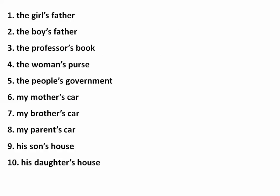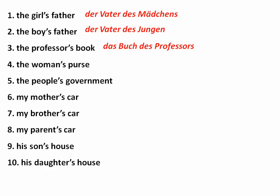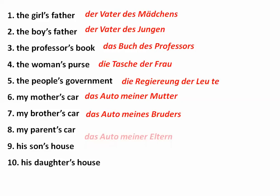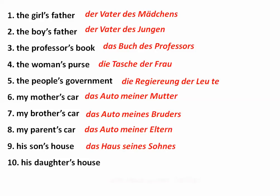And then just some more samples. 'The girl's father' — you would say the father of the girl — 'der Vater des Mädchens.' 'Der Vater des Jungen' — 'Jungen' is a little unusual, it doesn't add the S. 'Das Buch des Professors.' 'Die Tasche der Frau.' 'Die Regierung der Leute.' 'Das Auto meiner Mutter.' 'Das Auto meines Bruders.' 'Das Auto meiner Eltern.' 'Das Haus seines Sohnes.' 'Und das Haus seiner Tochter.' Vielen Dank für das Zuschauen.